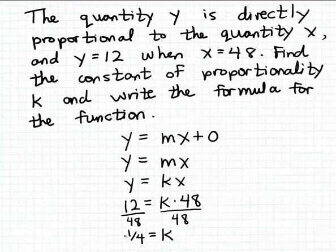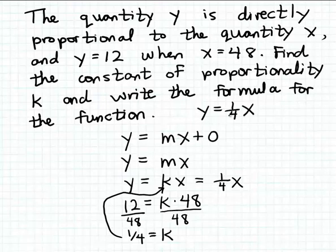Now we can substitute that back into our direct proportion function to get the complete formula. That gives us y = (1/4)x. So the formula for our direct proportion function is y = (1/4)x, and the constant of proportionality k is 1/4.